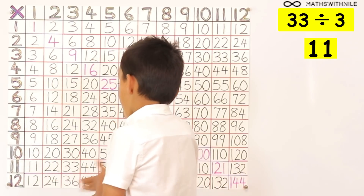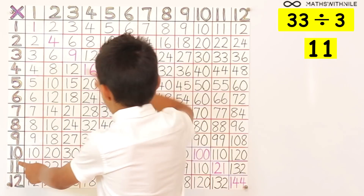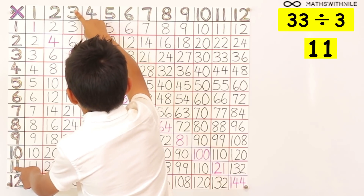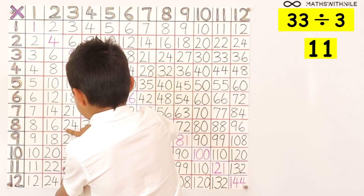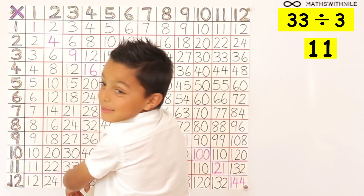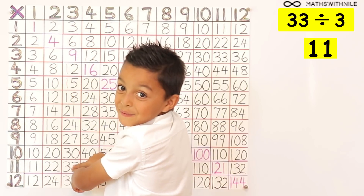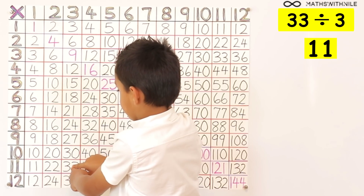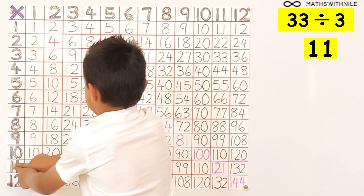So 33 divided by 3 is 11. Very good. Because 3 times 11 equals 33. Okay, next question.